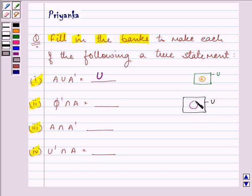For the second problem, we have phi complement. Phi is a null set, so null set's complement means the universal set. Now, universal set intersection A will give us what? What elements are present in both the universal set and in set A? It will be set A itself. So here we will fill it with set A.